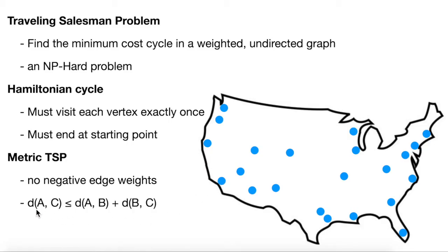We're also going to acknowledge the triangle inequality, which basically says that the shortest distance between any two cities is a straight line. You can visit a third city traveling between two cities, but that will always be longer than or the same as the straight line distance between those two cities. That is basically the problem, and it is generalized in computer science and modeled using a weighted undirected graph.